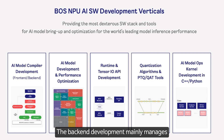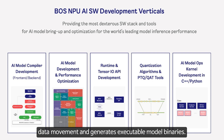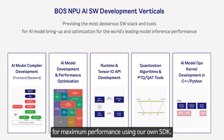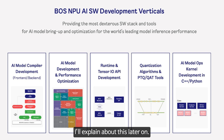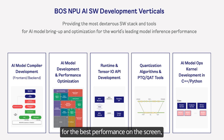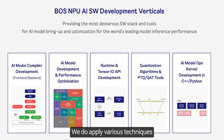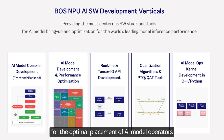The back-end development mainly manages data movement and generates executable model binaries that ensure efficient operation and performance. The second vertical is AI model development and performance optimization. We develop AI models and optimize them for maximum performance using our own SDK. As you can see an example of the placement of AI model operators for best performance on the screen, we can fully utilize MPU computing resources.